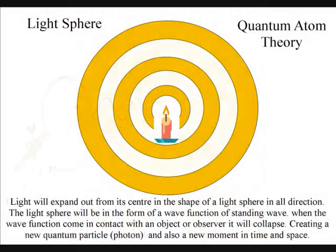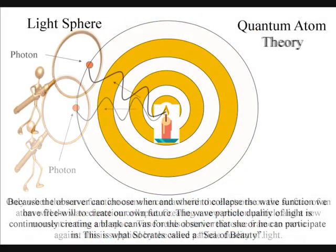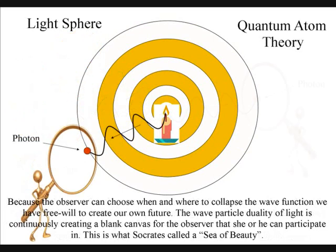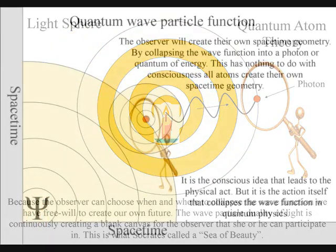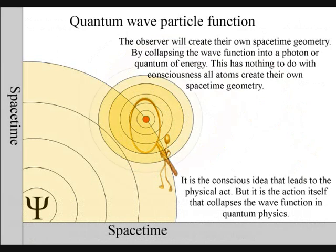The atoms bond together and then form their own space-time geometry in unison. It is because the observer can choose when and where to collapse the wave function that we have free will to create our own ripples in the fabric of space-time.